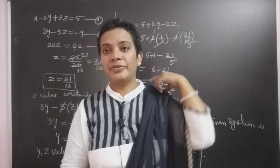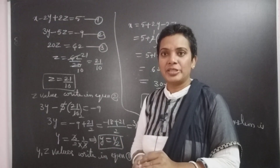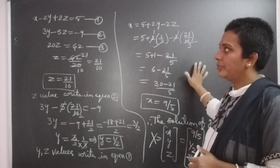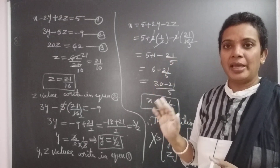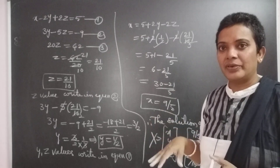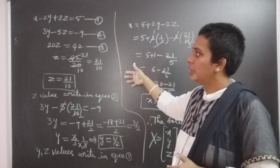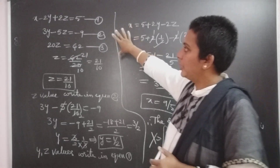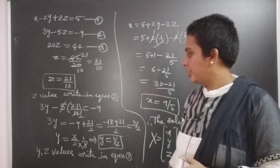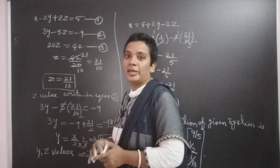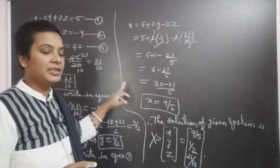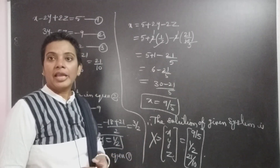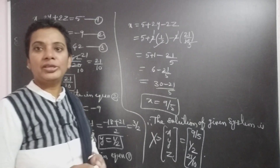To summarize how we find consistency: first, write the augmented matrix [A|B] from the matrix form AX = B. Next, reduce it to echelon form, find the rank of A and AB, and check if the rank equals the number of unknowns. If equal, the system is consistent with a unique solution. We then express the augmented matrix as linear equations, solve for Z, Y, and X by back substitution, and verify the values satisfy one of the original equations. That is the solution of the given system of linear equations. If you like this video, please subscribe to my channel and share with your friends.